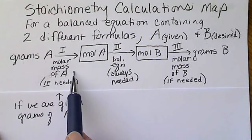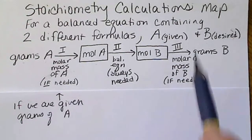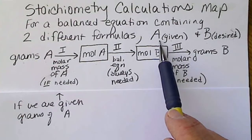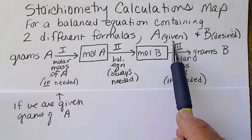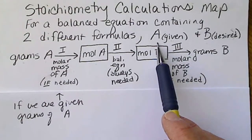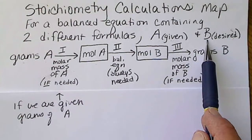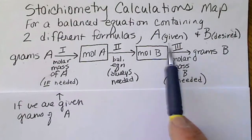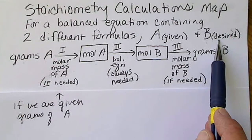This step would not be necessary if the problem gave us moles of A. So A is always going to refer to the information that the formula is, when we're given information about a formula. That's always going to be formula A. The problem is always going to ask us information about a second formula, so I'm always going to use that as formula B. So A and B are always going to be two different formulas. A is information given, B is what the question is asking us about.